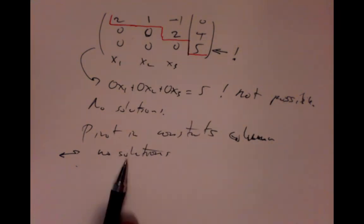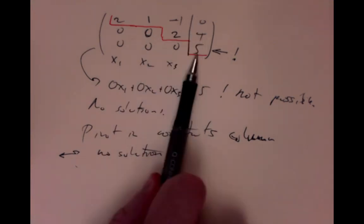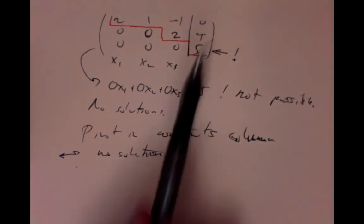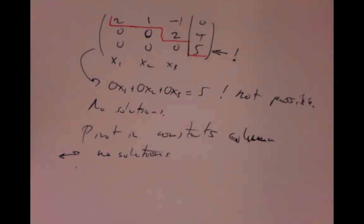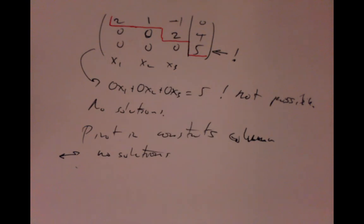It turns out it goes the other way too: if there's no pivot in the constants column, then there are solutions, because every pivot occurring for a variable solves for that variable in terms of later variables, and you can set the later variables to anything. So if there's no pivot in the constants column, the pivots all just solve for variables perfectly happily in terms of later variables. A pivot in the constants column is exactly when there are no solutions — and that's not immediately obvious, it takes a bit of thought.